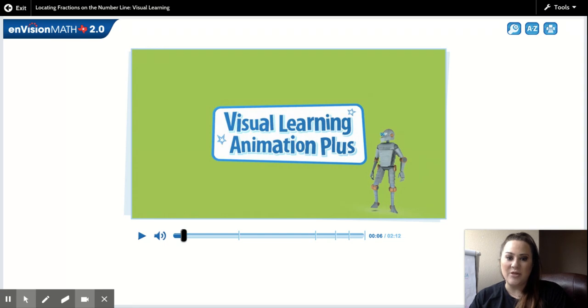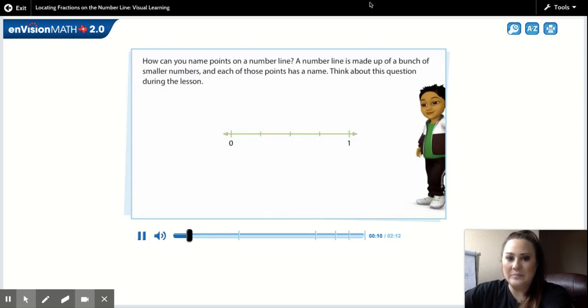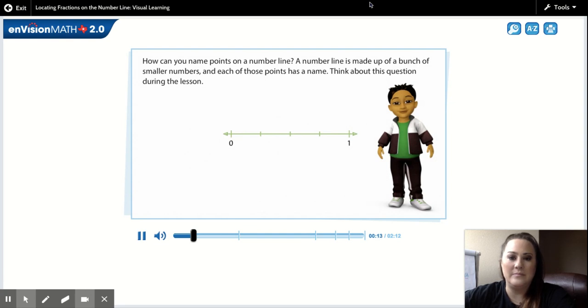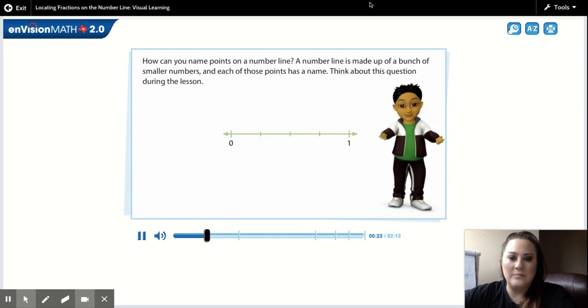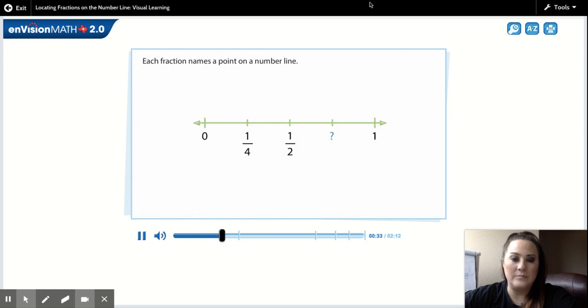Let's watch the lesson together. Let's go through the questions that the video asks us and then I will assign today's task. How can you name points on a number line? A number line is made up of a bunch of smaller numbers and each of those points has a name. Think about this question during the lesson. The arrows show that number lines go on forever. You can mark and label points on a number line. Each fraction names a point on a number line. One half is halfway between zero and one. What is one name for the missing fraction on the number line?